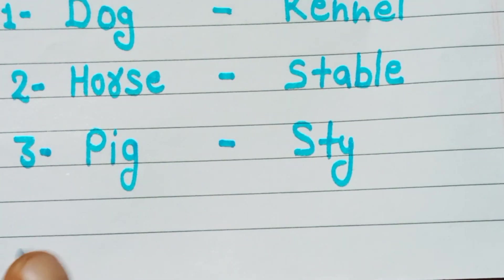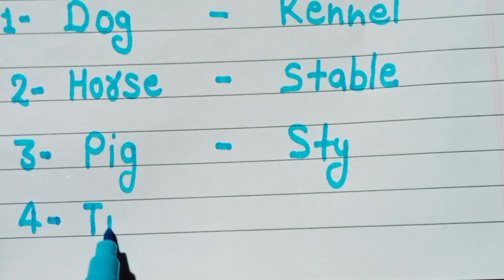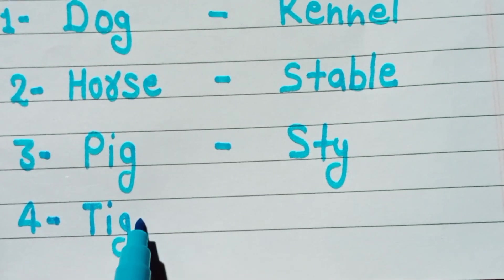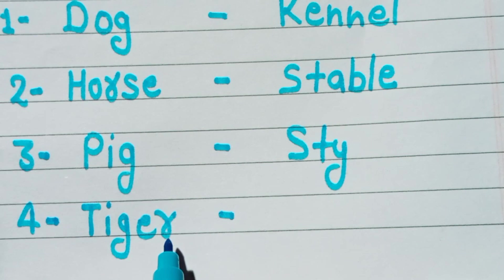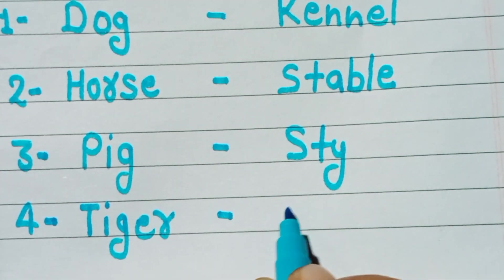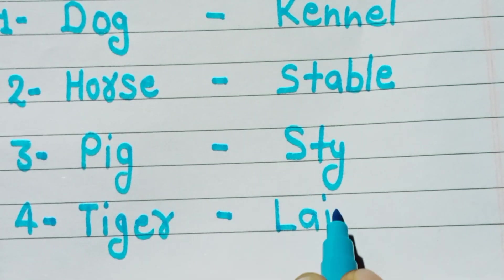Fourth number is tiger, t i g e r. Tiger home name is lair, l a i r.